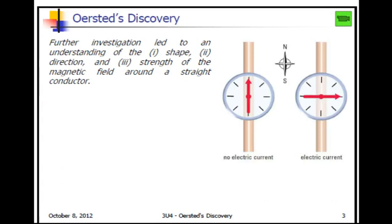So he figured there must be some sort of relationship or interaction between magnetism and electricity. He then figured that the shape, direction, and strength of the magnetic field around the straight conductor could all be determined using his understanding of the physics of electricity.